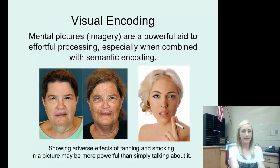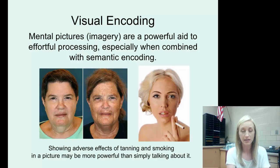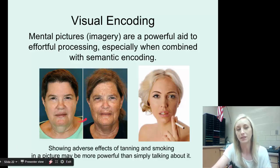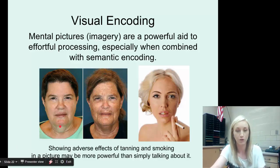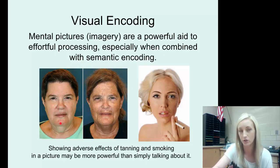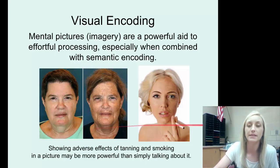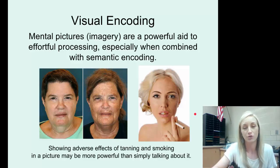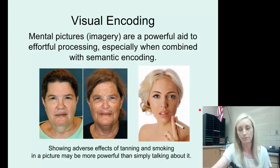Visual encoding with imagery: mental pictures are a powerful aid to effortful processing, especially when combined with semantic encoding. Showing the adverse effects of tanning and smoking in a picture may be more powerful than simply talking about it. For example, there's a picture of identical twins at age 61 — one living in Florida, a very sunny environment, and one living in a non-sunny environment. And there's a photoshopped image showing the effects of smoking on one side and not the other. That visual imagery makes the information more meaningful and more powerful.